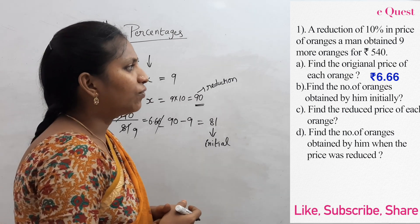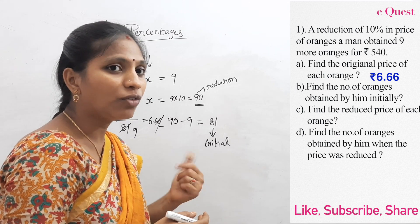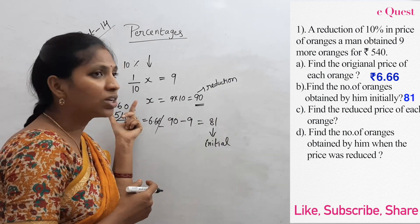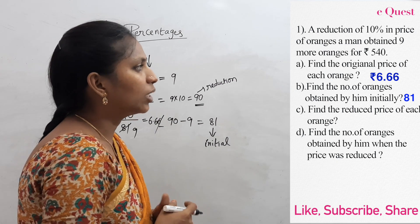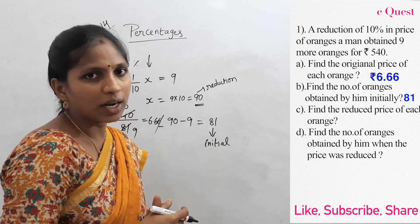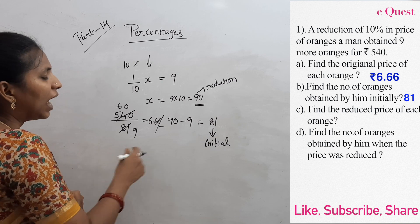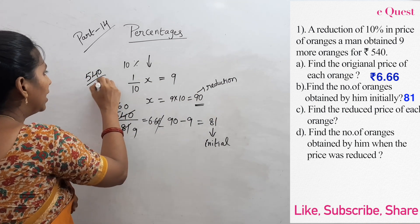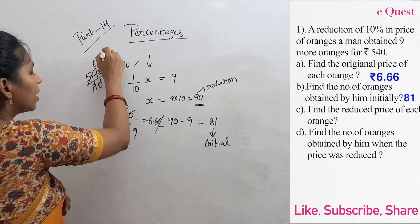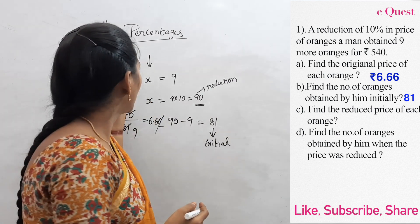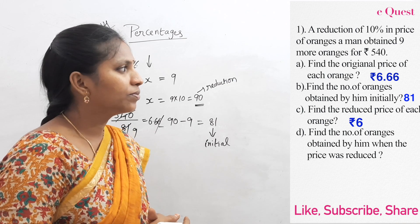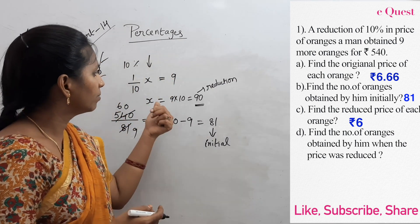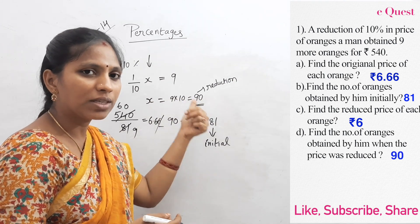Find the number of oranges obtained by him initially — that is 81 oranges for 540 rupees. Next, find the reduced price of each orange. After reduction there are 90 oranges per 540 rupees. So 540 by 90, cancelling 6 times, gives 6 rupees per orange after reduction. The number of oranges obtained after reduction is 90.